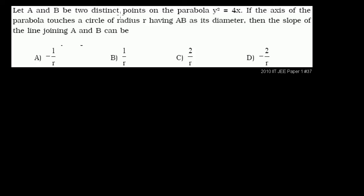Let A and B be two distinct points on the parabola y squared equals 4x. If the axis of the parabola touches a circle of radius r, having AB as its diameter, then the slope of the line joining A and B can be. So let's draw this.